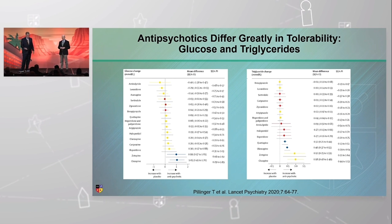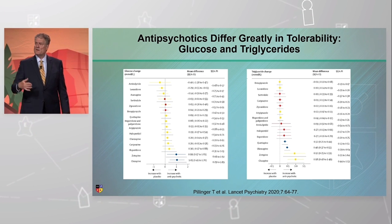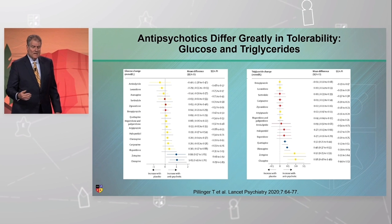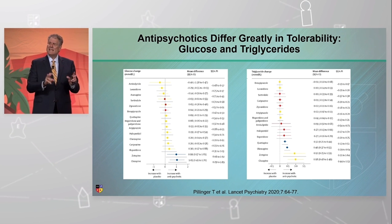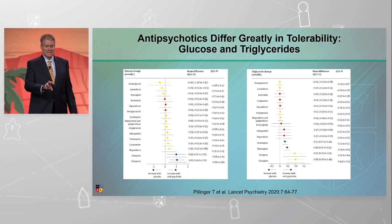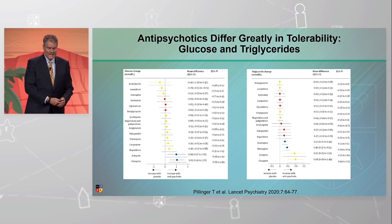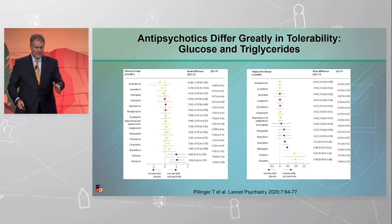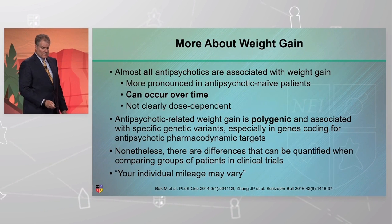On glucose and triglycerides — let me finish this story. What you see is they significantly differ not only on weight gain but on glucose and triglycerides, which are related but also independent in some ways. You can see disruption of metabolic parameters without significant weight gain. So there's a gradient there as well.